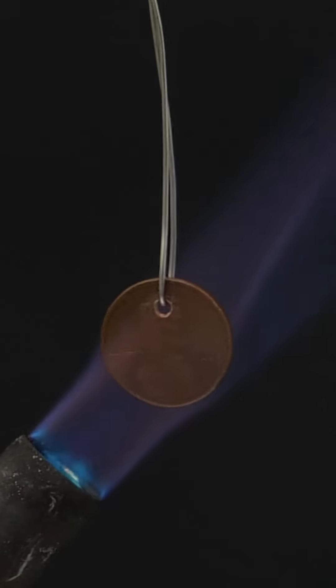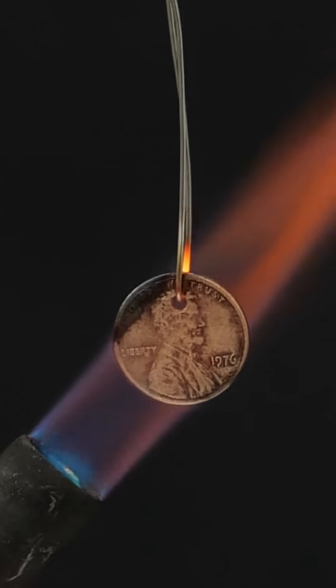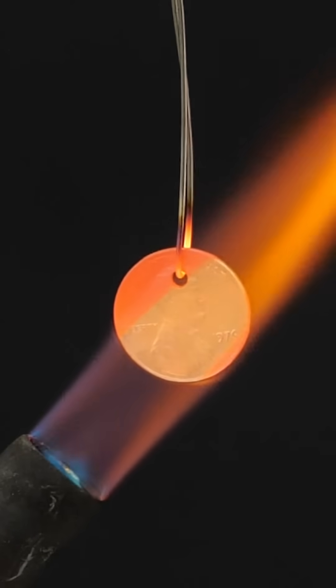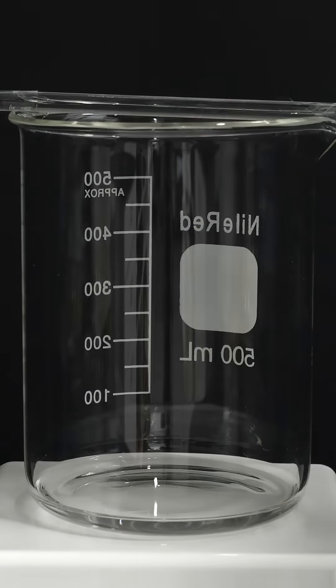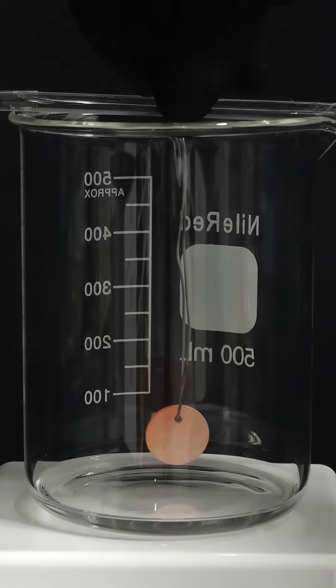All I need to do is get a blowtorch and heat it up until it's red hot. Then, I can lower it into the beaker and hold it just slightly above the acetone.